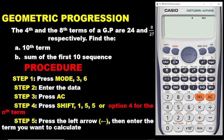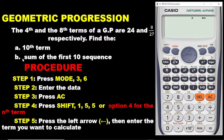The 4th and the 8th terms of a GP are 24 and 8/27 respectively. Find: A, the 10th term; B, the sum of the first 10 terms of the sequence.